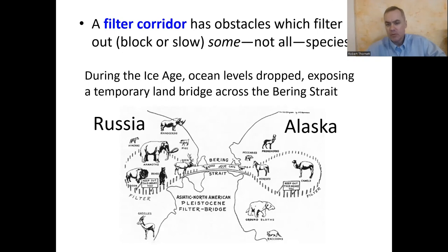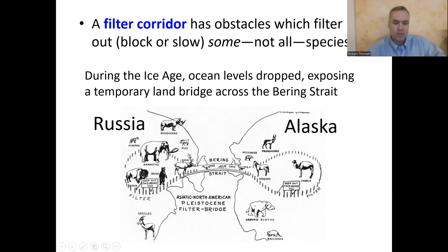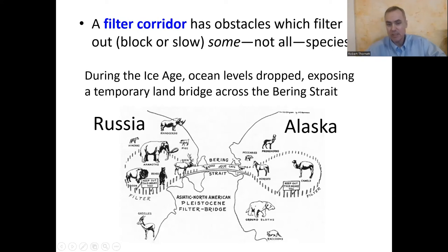Going the other way, some quintessential American species we think of — like the bear, the bison, and deer — are actually Asian species. They were able to cross the Bering Land Bridge going the other direction. The bison and the bear started in Asia and came to America during the ice age. Now we think of them as common American species.